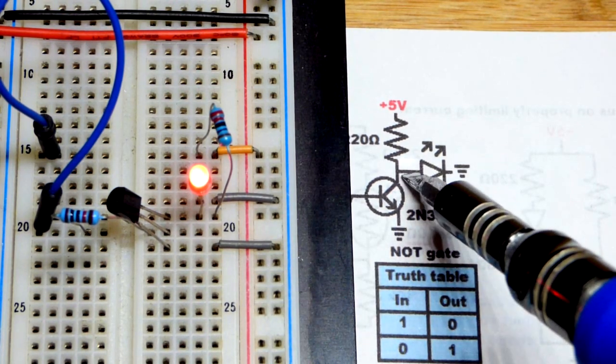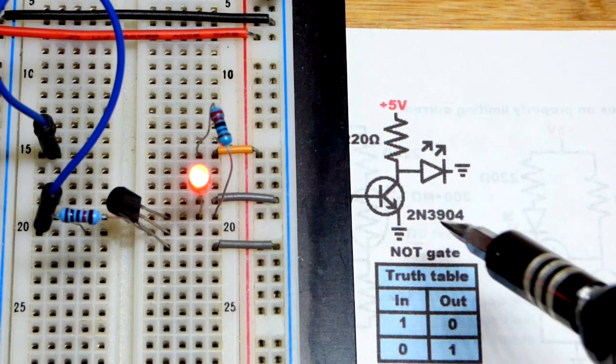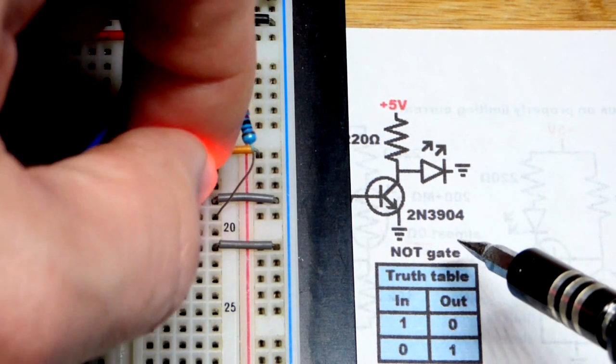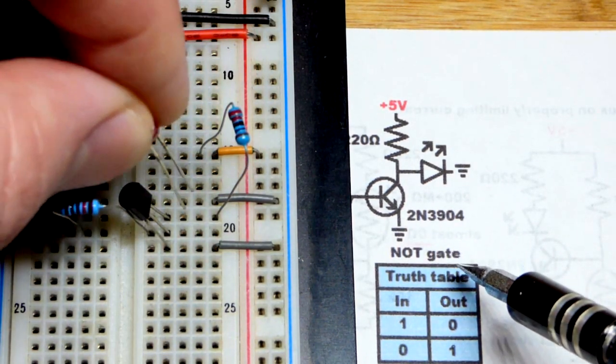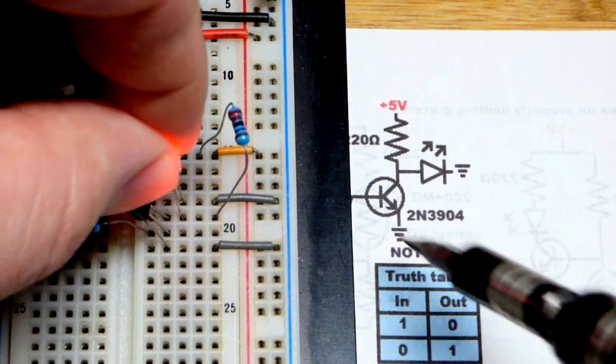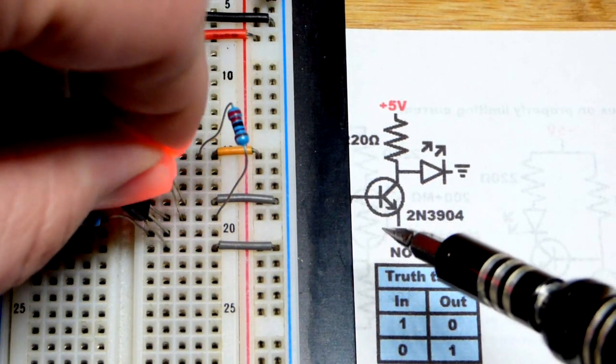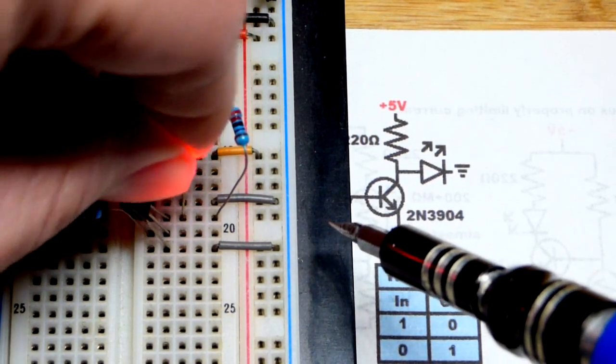Emitter going to ground there. At the collector, we have the anode—the long lead of the LED. Very important you put the LED in the right way. Short lead, the cathode, going to that jumper that goes to ground right there.